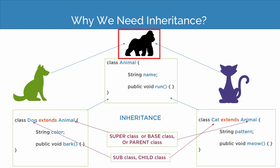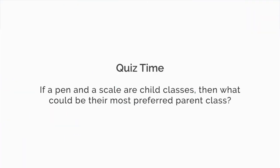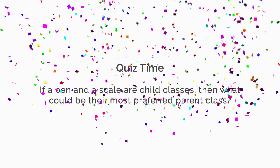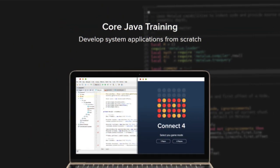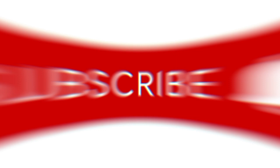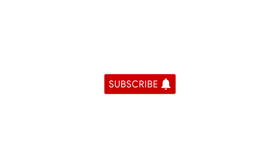Now that you have understood the concept of inheritance, here is a question for you: if a pen and a scale are child classes, then what could be their most preferred parent class? Answer in the comment section below — one lucky winner would receive an exciting InternShala Trainings merchandise. Hope you enjoyed learning about inheritance in Java. This video is a part of InternShala Trainings Core Java Training Program. To learn the basic concepts of Java and object-oriented programming, visit the link in the description. To learn exciting new concepts and skills, subscribe to our channel and click on the bell icon to stay tuned.